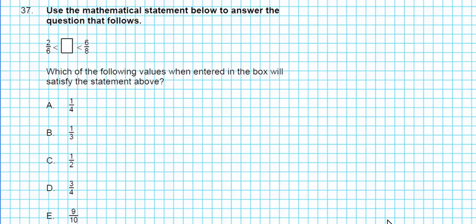Let's take a look at number 37. It says use the mathematical statement below to answer the question that follows. So two sixths is less than one and that is less than six eighths. Which of the following values when entered in the box will satisfy the statement above? We're going to convert everything to decimal so that can help us order the numbers by magnitude. Let's start with two sixths. Two sixths can be reduced by dividing the numerator and the denominator by the GCF which is two, so this reduces to one-third. And then we have six eighths can be reduced by dividing the numerator and denominator by the GCF which is two, so six eighths reduces to three-fourths.